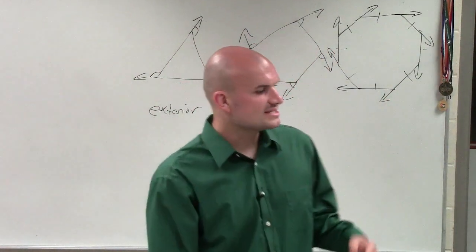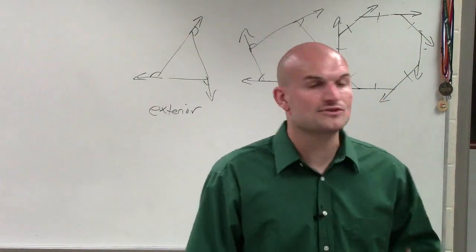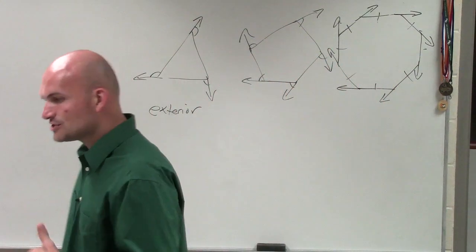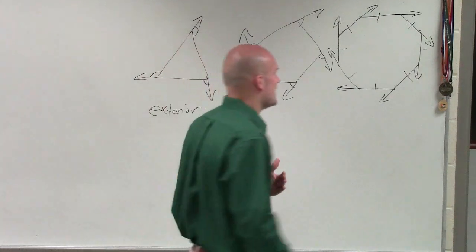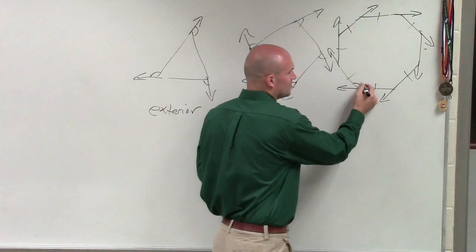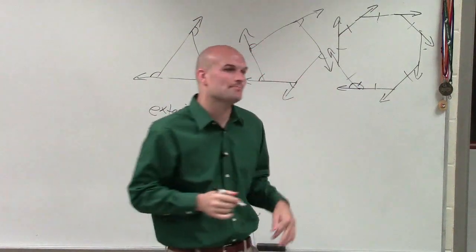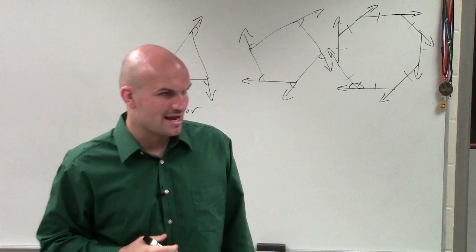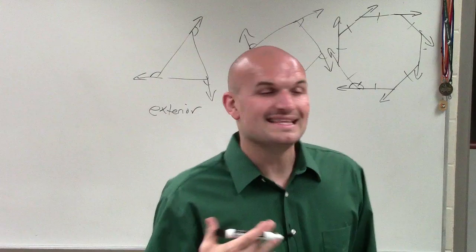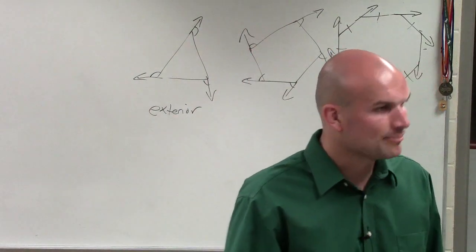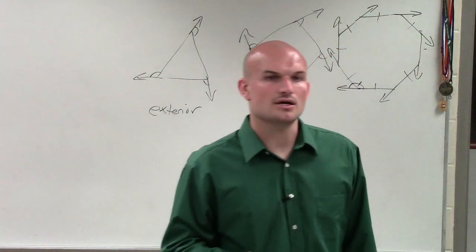So therefore, since the sides are equal in measure, we know the angles are equal in measure. And if the angles are equal in measure, that means the exterior angles are equal in measure, right? Because if this angle, then we know the exterior angle, remember, is supplementary with the interior angle. I'll say that one more time. The exterior angle is supplementary with the interior angle.